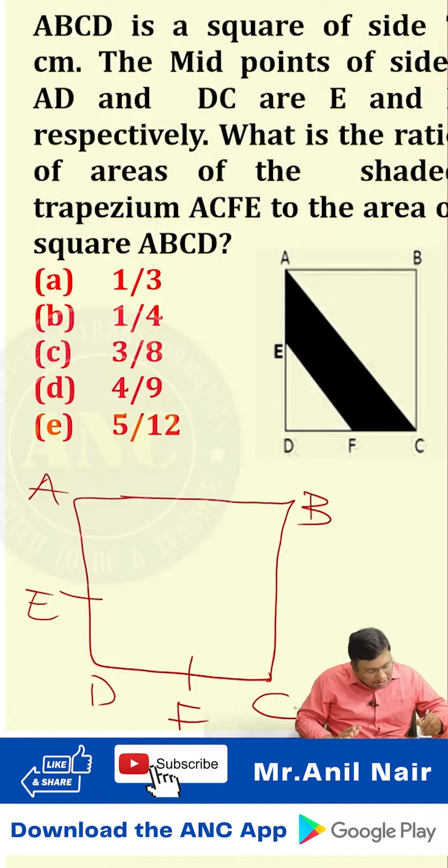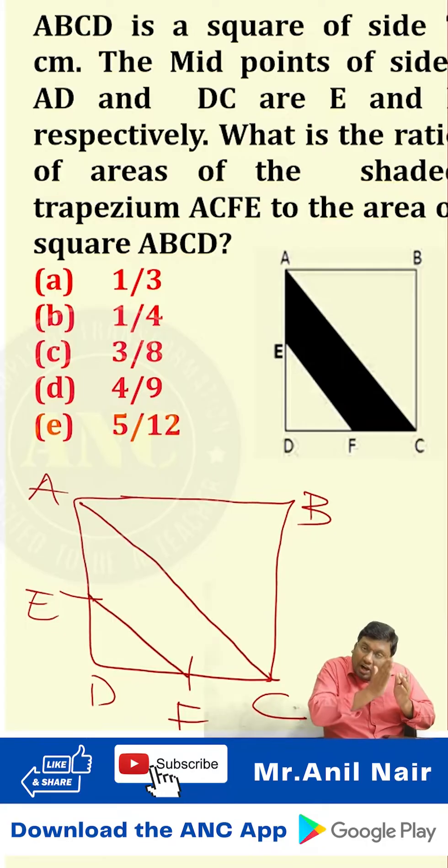What is the area of the shaded region? The diagonal. What I should do is along the diagonal fold this figure. If I fold the figure, E will come here, F will come here.